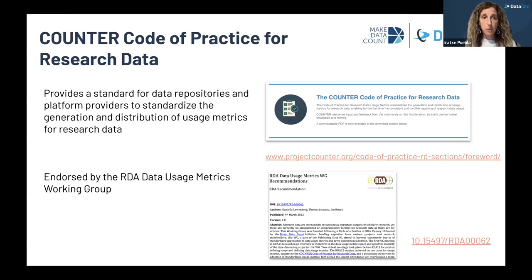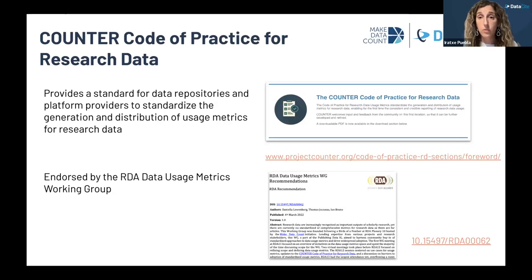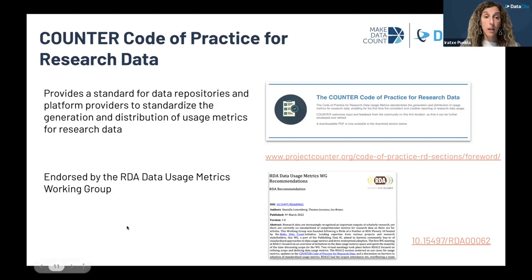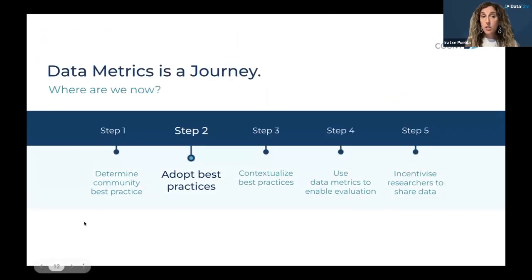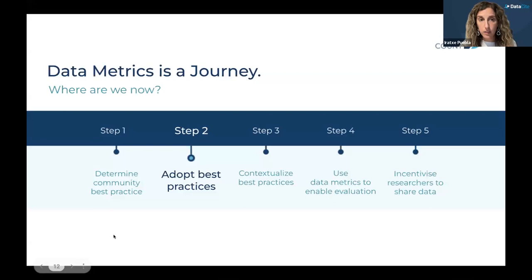The Counter Code of Practice for Research Data provides a standard for repositories and platform providers to standardize how they generate and distribute usage metric reports for the data they host. Another related effort was the RDA Data Usage Metrics Working Group, which facilitated community discussions on this topic, published its recommendations last year, and importantly endorsed the use of the Counter Code of Practice for repositories to normalize their usage metrics and also to use Datasite for aggregation.